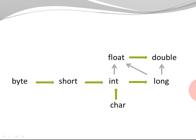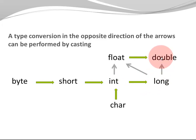Let's have another look at this graph. Promotion provides me with implicit type conversion from a given type to any other type that can be reached by following along the arrows. A type conversion in the opposite direction of the arrows can be performed by casting. If I have a long, for example, I can cast it to an int or a short or a byte. If I have a character, it gets promoted to an int. If I have an int and I want a character, I need to cast it to a character.